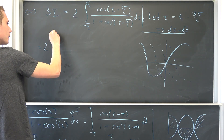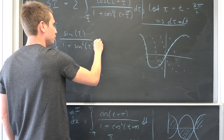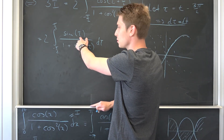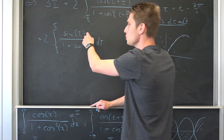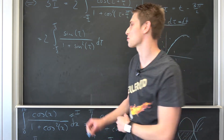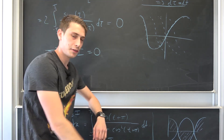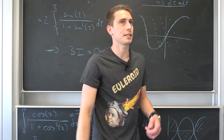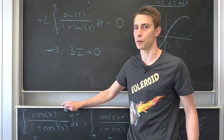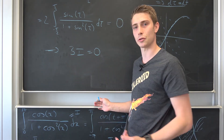And voilà, we are actually done! Because if you plug negative tau in, sine of negative tau is negative sine of tau, so this gives us the negative of the integrand overall. We are integrating an odd function over a symmetric integral — this piece is nothing but zero. So 3i equals zero. By the Peano axioms, 3 is not equal to zero, meaning the only way for this to be right is that our original integral i is equal to zero.